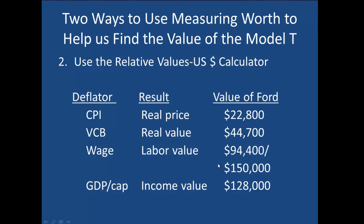You can think of it this way. In 1909, $850 represented about 2 years' wages for a production worker. Given the growth in unskilled and production worker wages over time, that 2 years' wages would now be $94,000 or $150,000 — that is today's equivalent of about 2 years' wages. Finally, the income value, our last result, uses GDP per capita as the deflator. GDP per capita is a broader measure of income, including not just the growth of wages, but also interest, rent, and profits. This represents how much the average person would have to earn from all sources today to be comparable to a person spending $850 on a Model T in 1909.